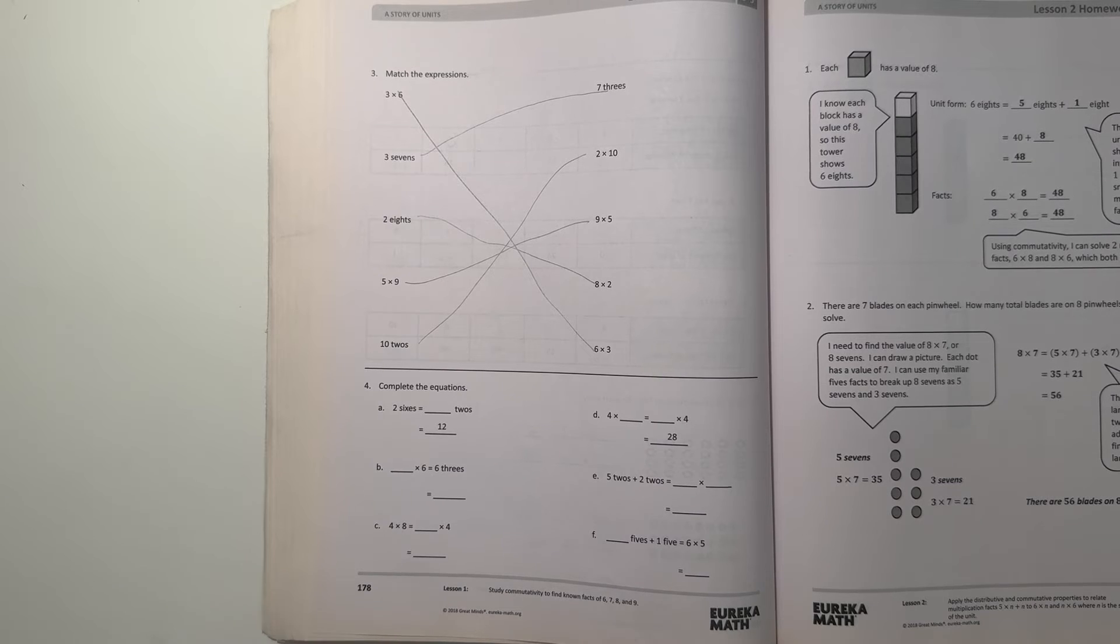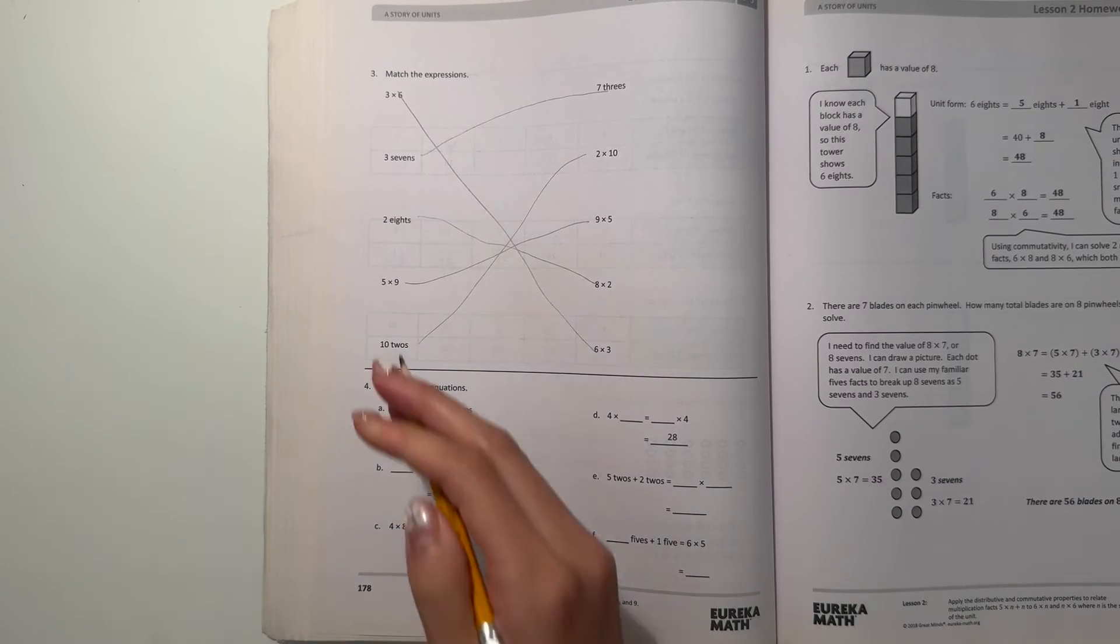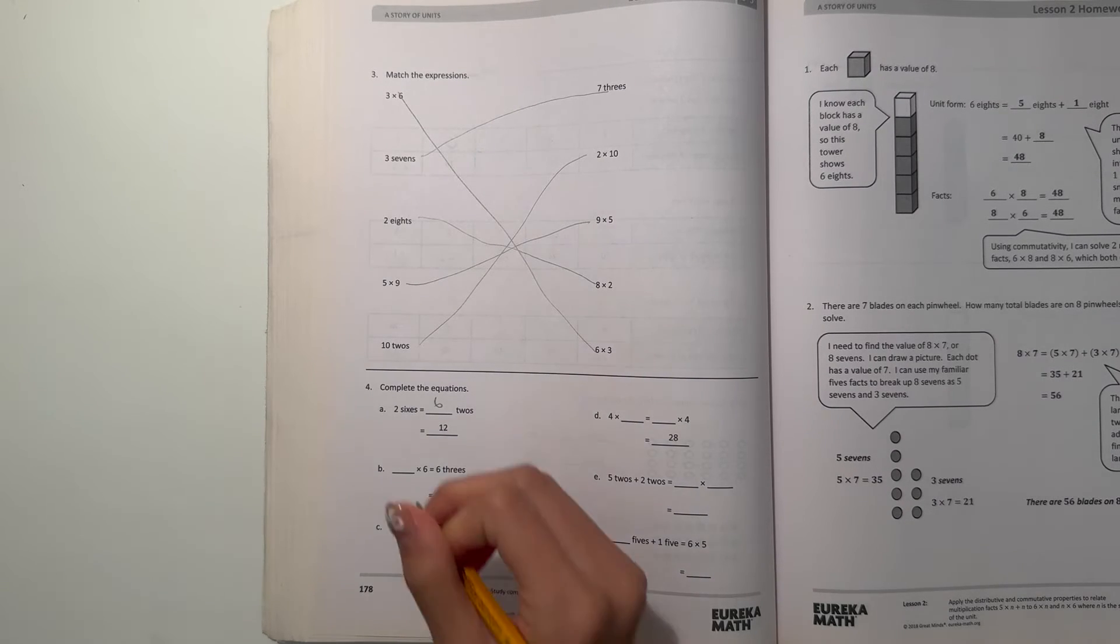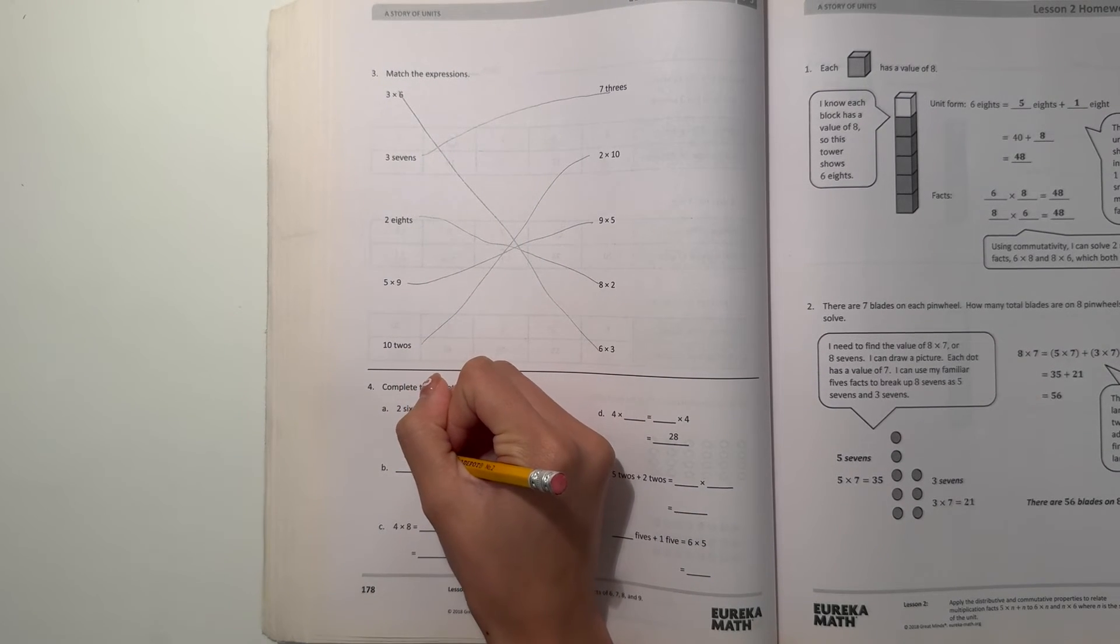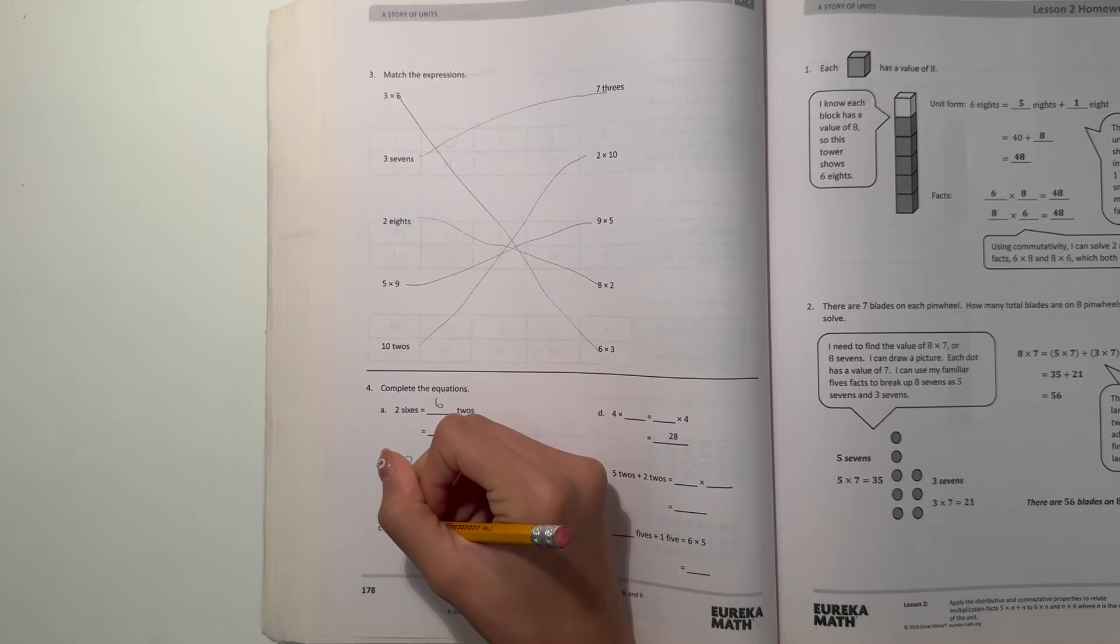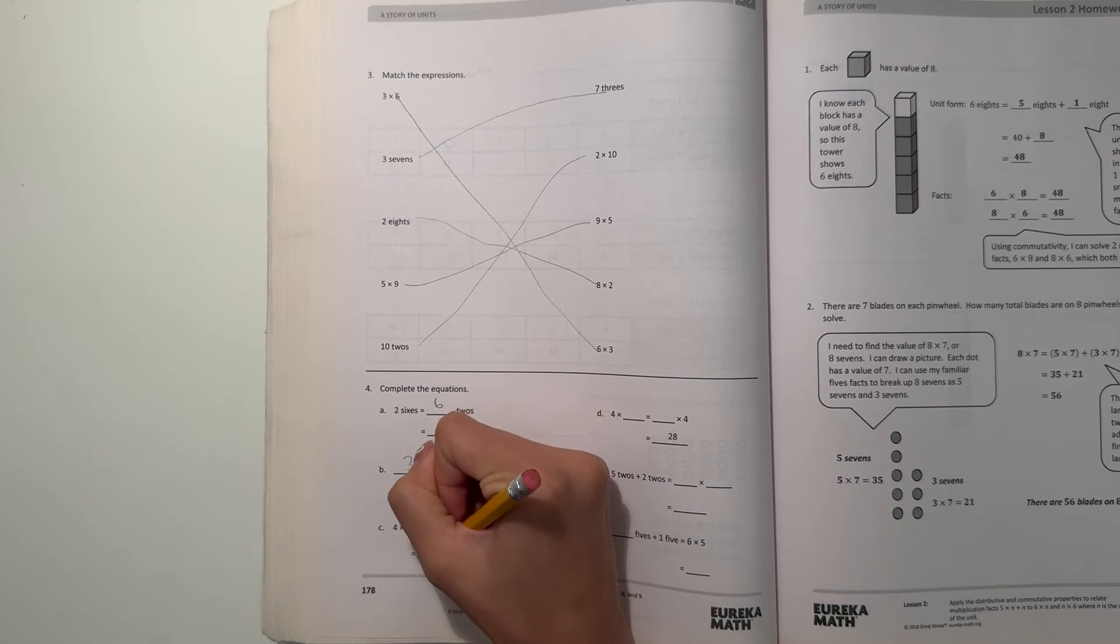Number 4, complete the equations. So 2 6's equals 6 2's. And then B, we have 3 times 6 equals 6 3's. And that would be 18. And then 4 times 8 equals 8 times 4, which is 32.